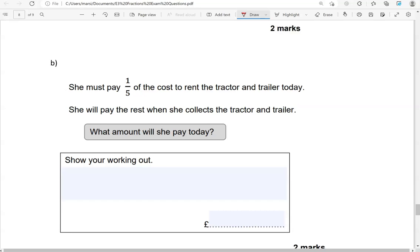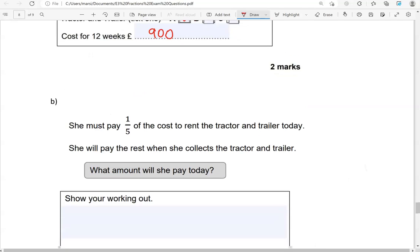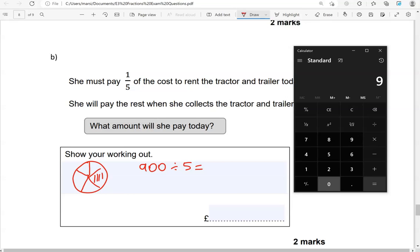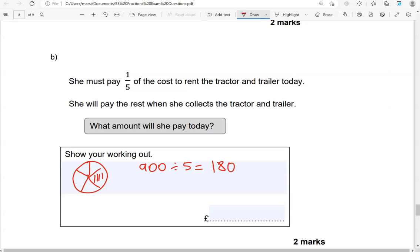She must pay one-fifth of the cost to rent the tractor and trailer today. What amount will she pay today? One-fifth of the 900 pounds. So we're going to divide the 900 by five. That gives us one hundred and eighty pounds.